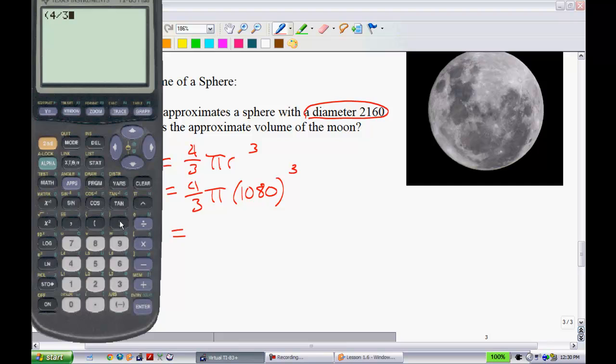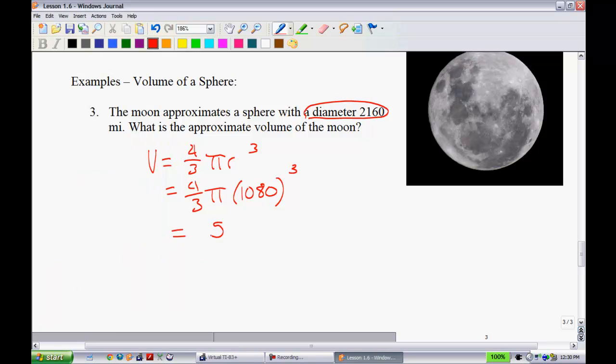On my calculator, you don't actually have to hit times π. Some of yours might not be the same. And then I go 1,080, all raised to the power of 3. All right, and we get this big number. Now, your calculator may have actually used scientific notation at this point. I'm not sure. So, I'm going to write it two different ways. So, we have 5,276,669,286 miles cubed.